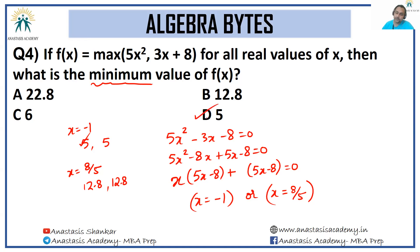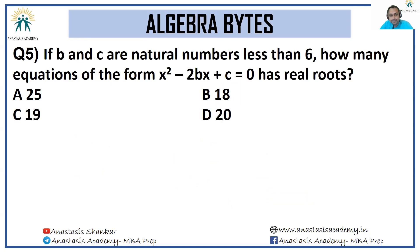Let's go. Last question: if b and c are natural numbers less than 6, how many equations of the form x² - 2bx + c has real roots? If we are looking for real roots, we are looking for b² - 4ac ≥ 0. a here is 1 and b here is 2b, so let's write this as 4b² - 4ac. a is 1, or b² - c has to be greater than or equal to 0. So let me just fill out the cases.